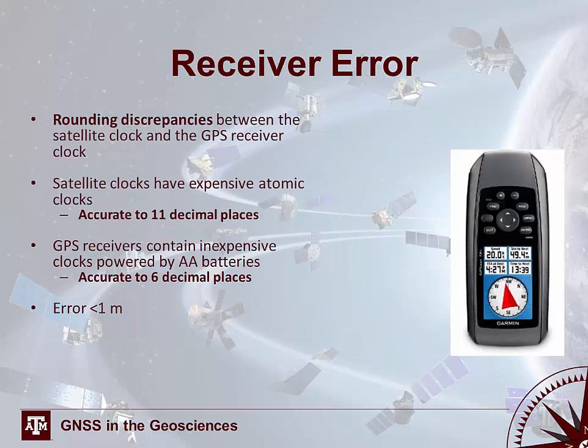Receiver error is simply a rounding discrepancy between the satellite clock and the GPS receiver clock. Satellite clocks, based on expensive atomic clocks, are accurate to about 11 decimal places. GPS receiver clocks, powered by AA batteries, are only accurate to 6 decimal places. This rounding discrepancy introduces an error of about 1 meter.